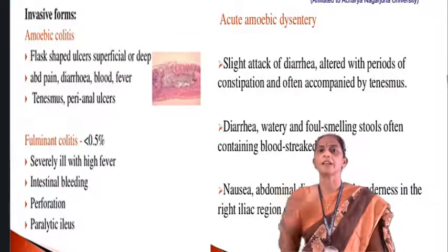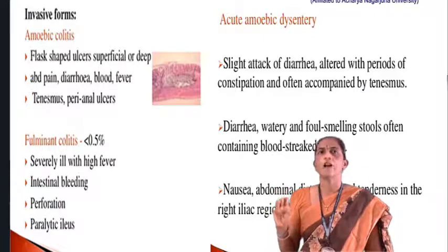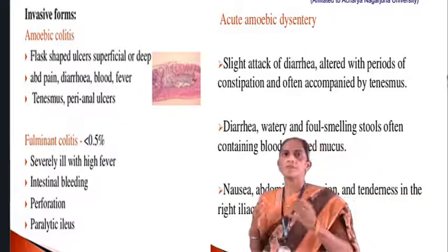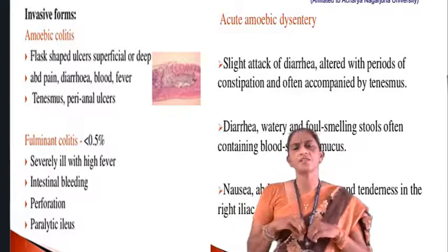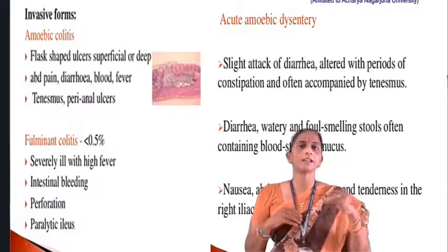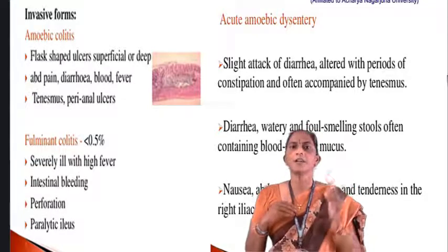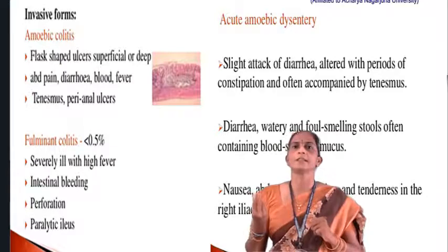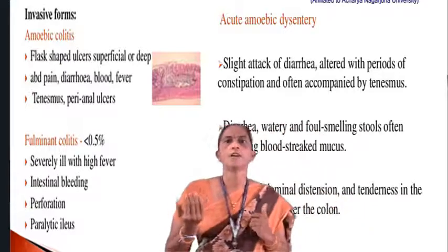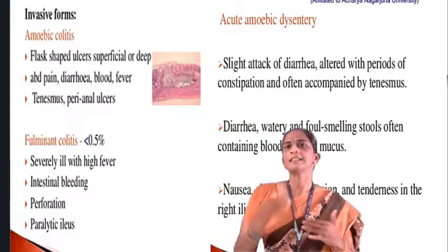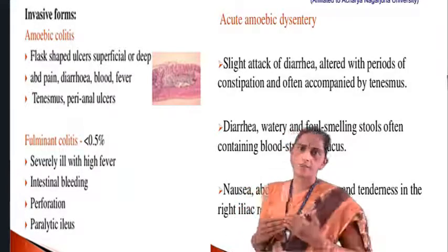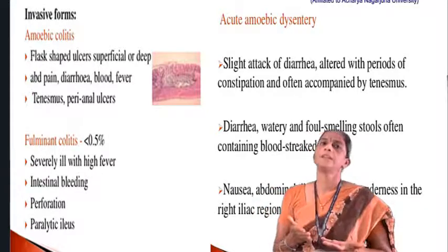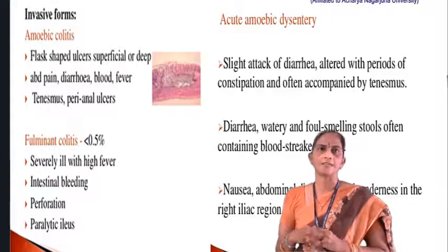The reproduction of Entamoeba histolytica has three stages: excystation, encystation, and multiplication. Excystation is the process of conversion of cysts into trophozoites. The cyst of Entamoeba histolytica enters the body through ingestion of contaminated food and water, and then undergoes excystation — converting cysts into trophozoites, the active feeding stage.